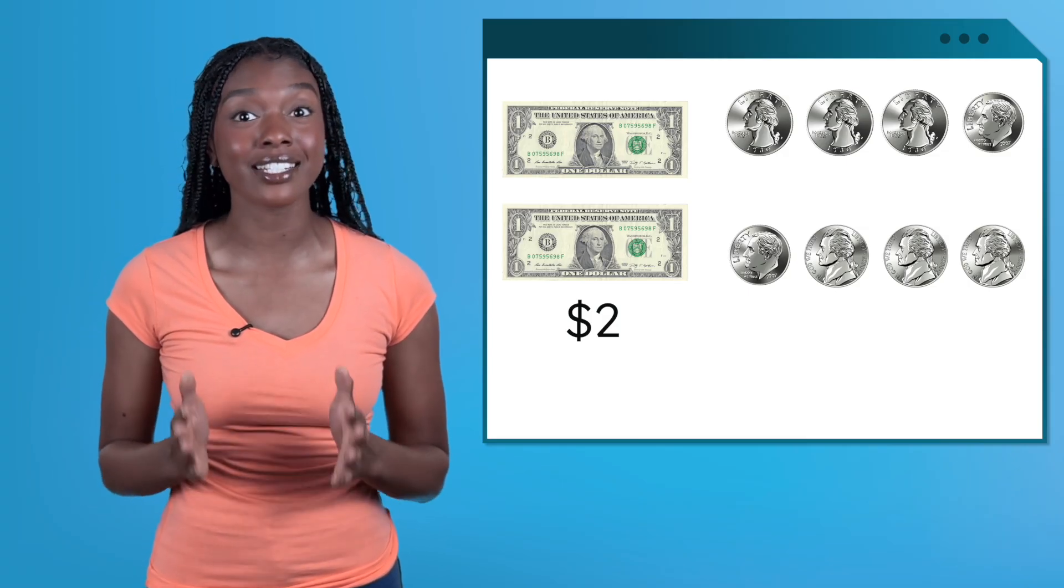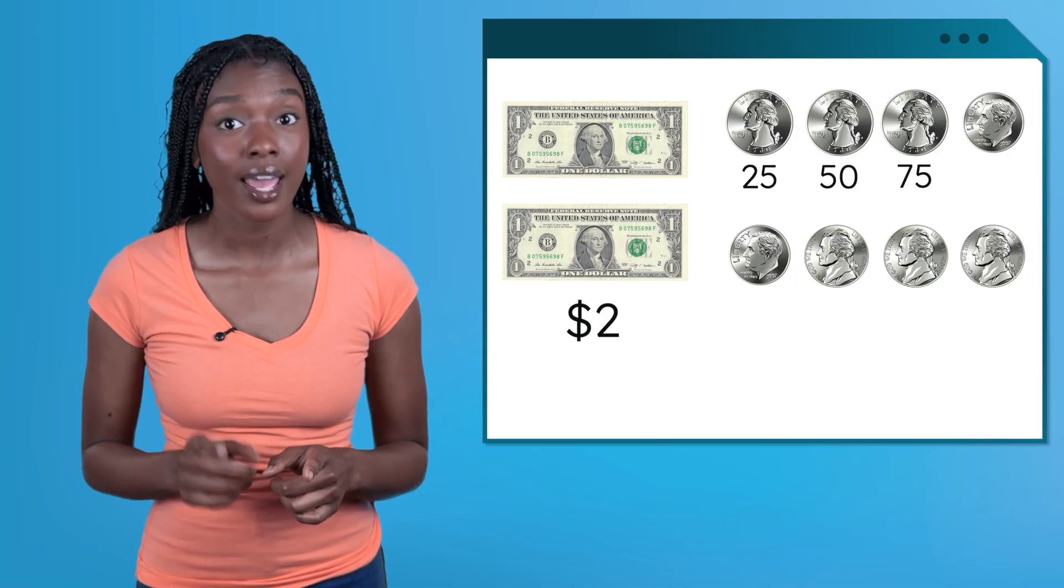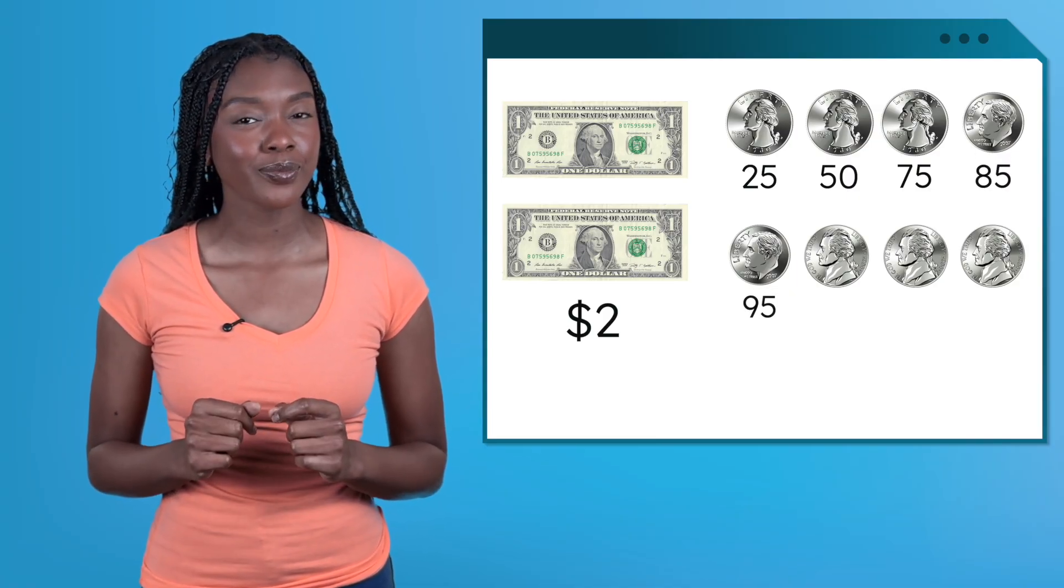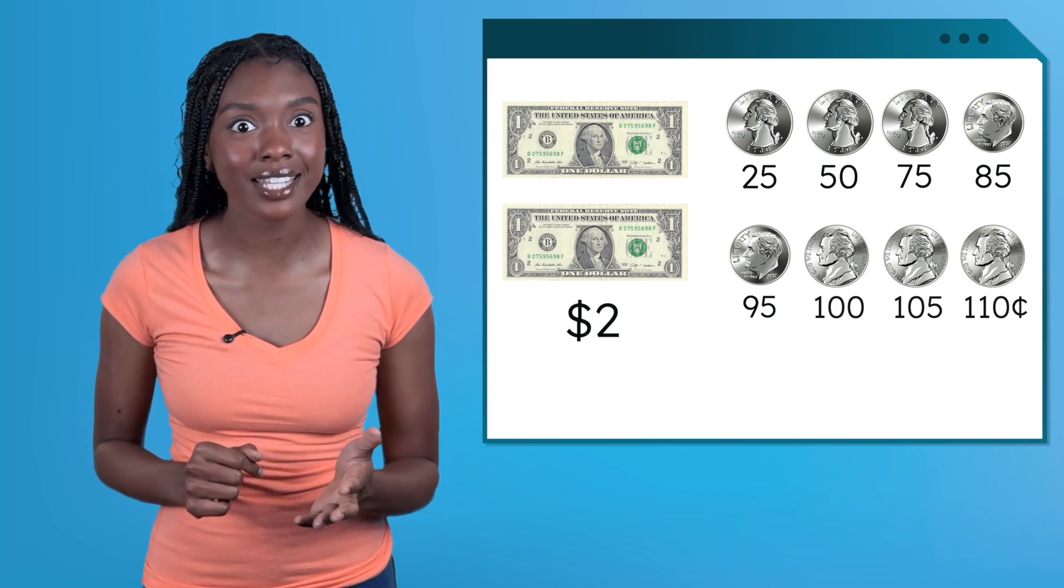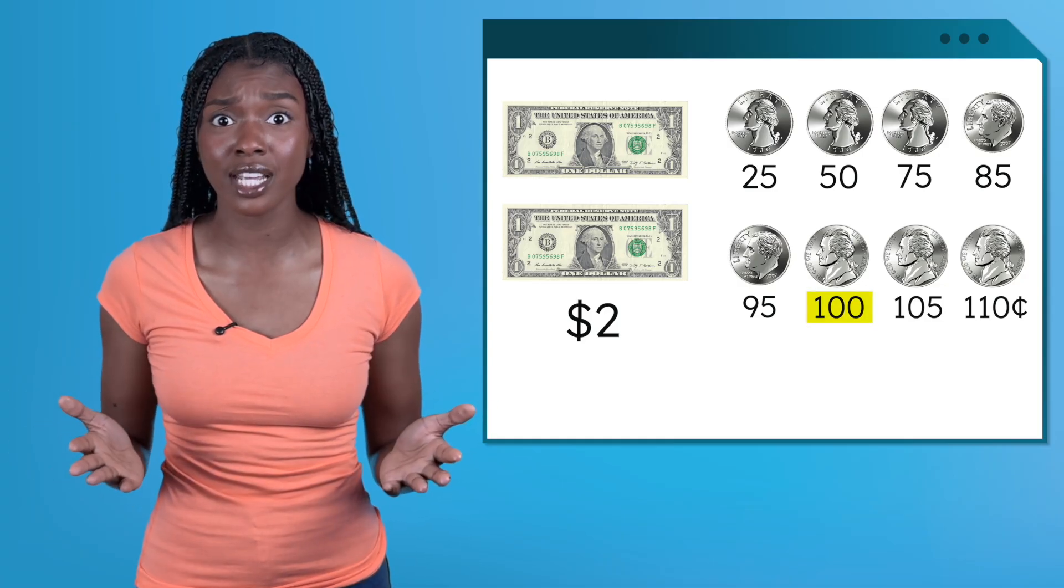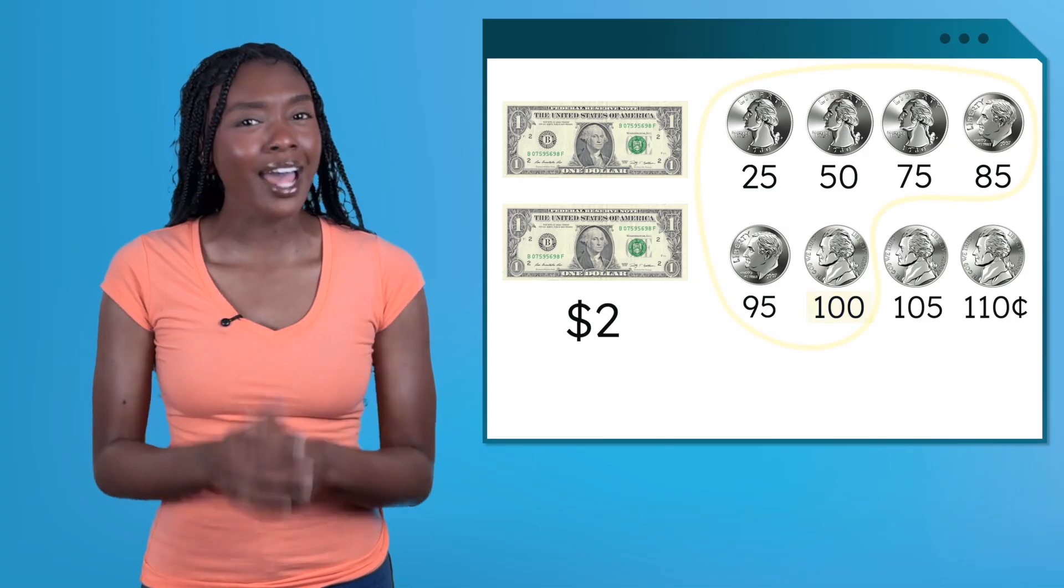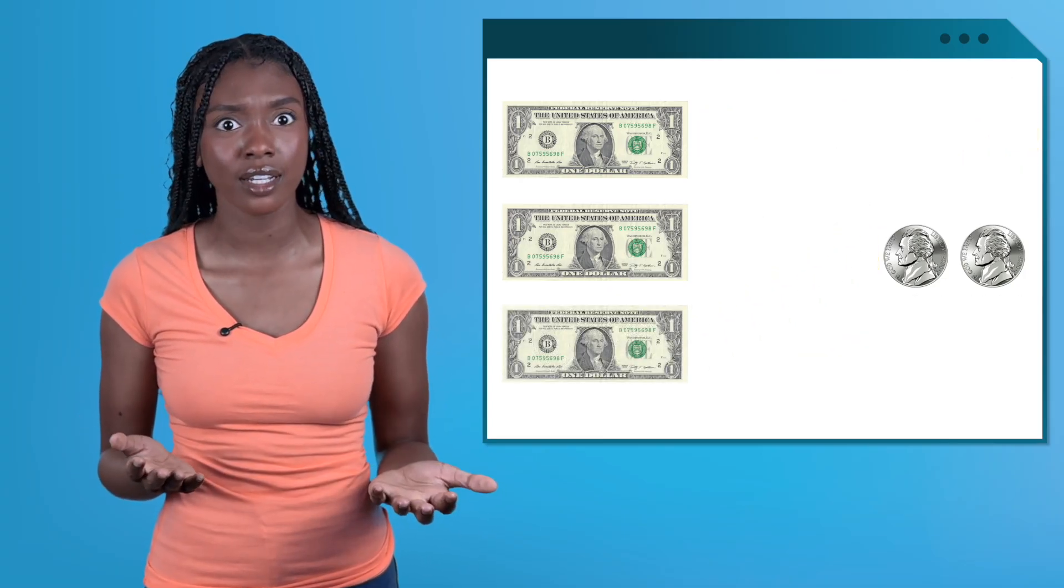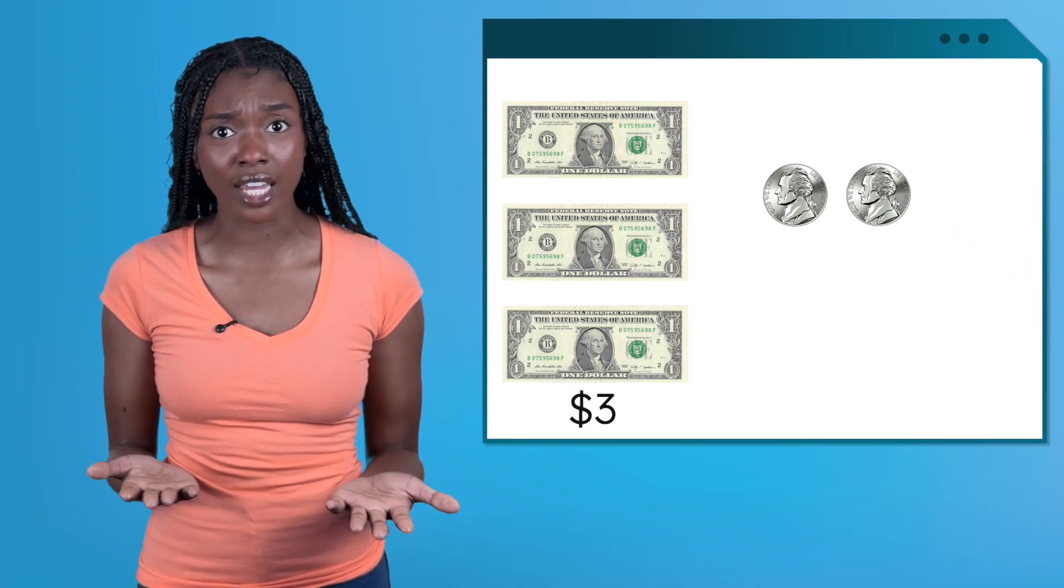Our three quarters gives us 75 cents, then we add our dimes: 85, 95. And finally our nickels: 100, 105, 110 cents. Wait a minute, we made it to 100 cents, which we know is equal to one dollar. That means we can exchange 100 cents for another dollar. Now we have three dollars. How many cents are left after our exchange? 10 cents. So our total is three dollars and 10 cents.